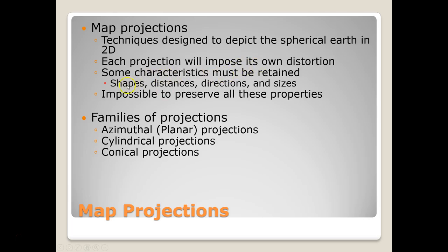Some of the characteristics that get distorted or retained are shape, distances, directions, and sizes. It's impossible to preserve all of these properties when we flatten a 3D object into 2D. It is possible to retain some of them, and it depends on our application which characteristics we want to retain and which ones can be compromised.